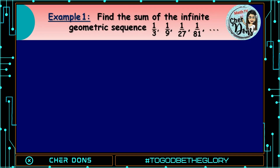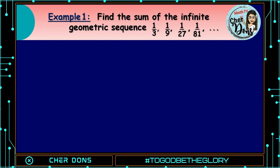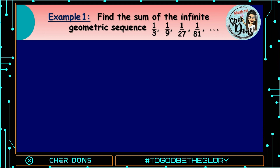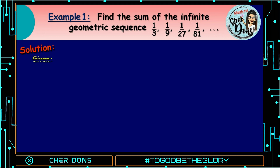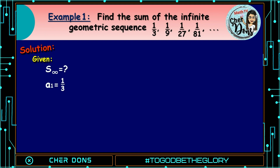Example number 1: Find the sum of the infinite geometric sequence 1/3, 1/9, 1/27, 1/81, and so on. Solution — given: we're looking for the sum to infinity. a sub 1 is equal to 1/3, and r is 1/3.